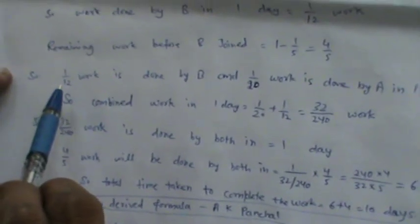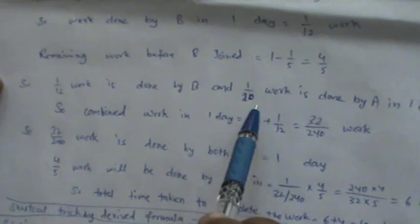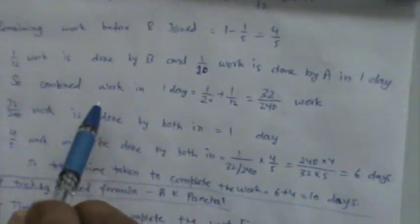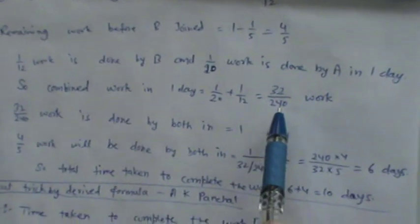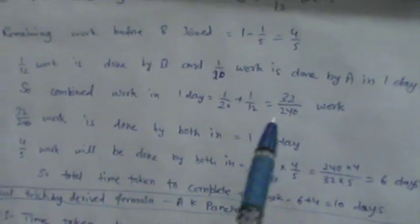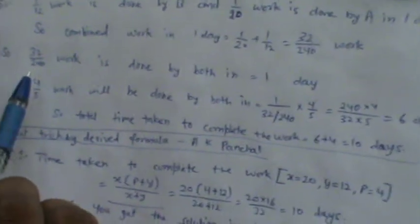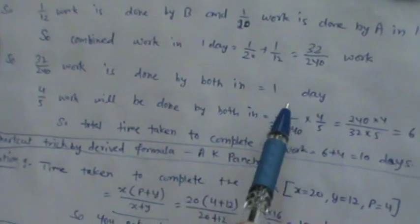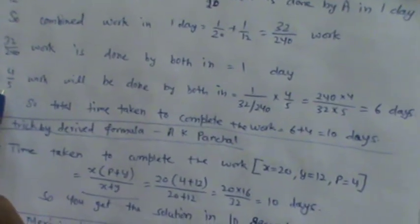Now 1 over 12 work is done by B and 1 over 20 work is done by A in 1 day. So their combined work will be 1 over 20 plus 1 over 12 is equal to 32 divided by 240 work.